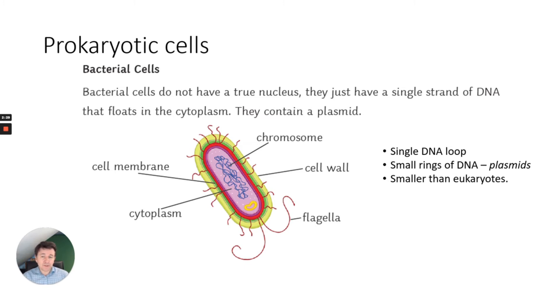They're also much smaller than eukaryotes. They're much simpler in terms of their structure, but they have similar structures to eukaryotic cells except they do not have a true nucleus and they have small rings of DNA called plasmids.